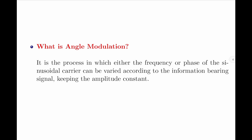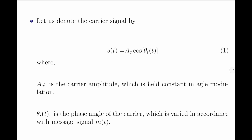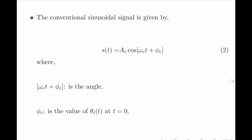Let us now provide a mathematical analysis of angle modulation. Let us consider a carrier signal S(t) given by AC·cos(θᵢ(t)), where AC is the carrier signal amplitude, which is held constant in angle modulation, and θᵢ(t) is the phase angle of the carrier, which is varied in accordance with the message signal M(t). For a conventional sinusoidal signal, S(t) is defined as AC·cos(ωc·t + φc), where ωc·t + φc is the angle, and φc is the value of θᵢ(t) at time t = 0.